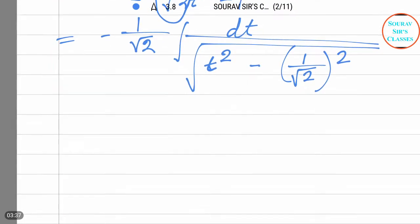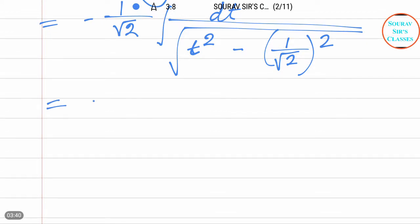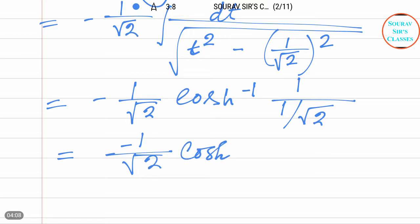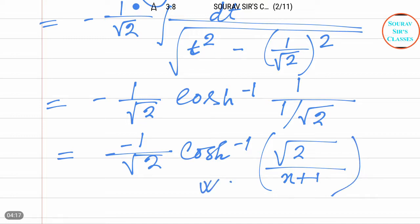From this we can write minus 1 by root 2 into cosec⁻¹(1 by 1/root 2). Again from this we can write minus 1 by root 2 into cosec⁻¹(root 2 divided by x plus 1). So this is our answer.